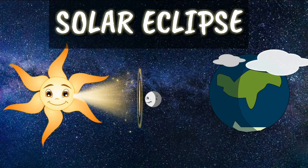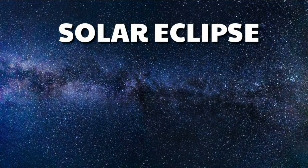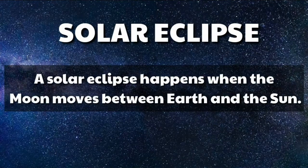Solar Eclipse. A solar eclipse happens when the moon moves between Earth and the Sun.